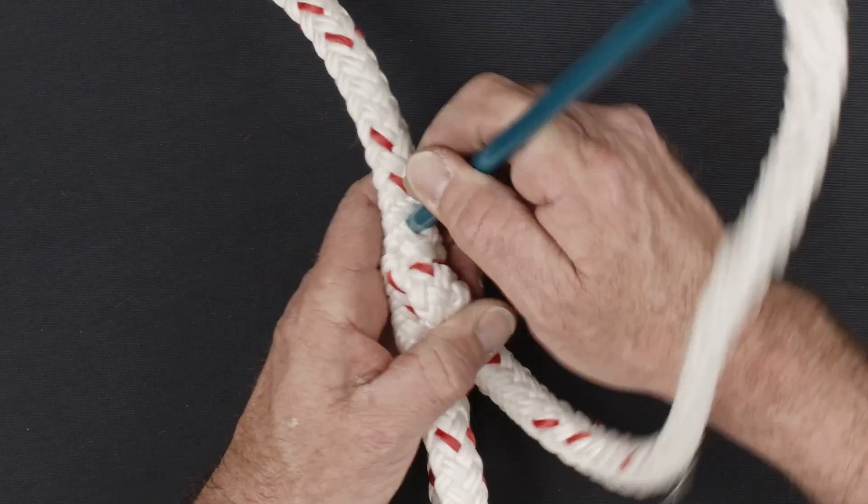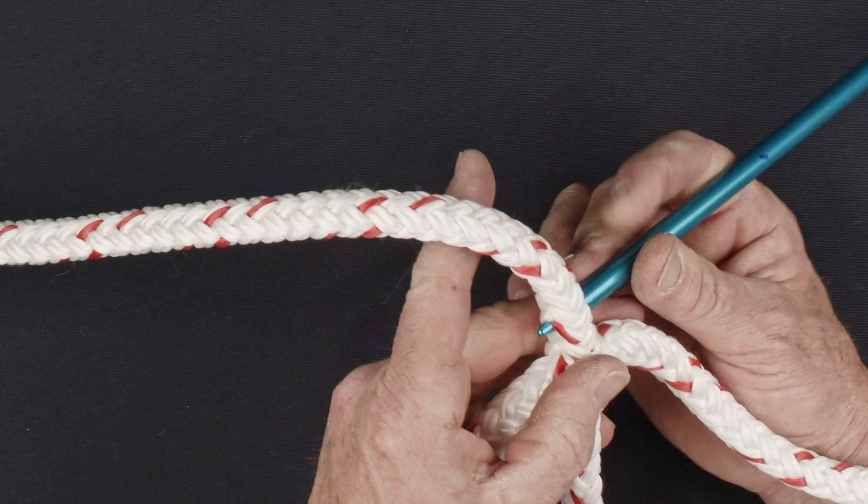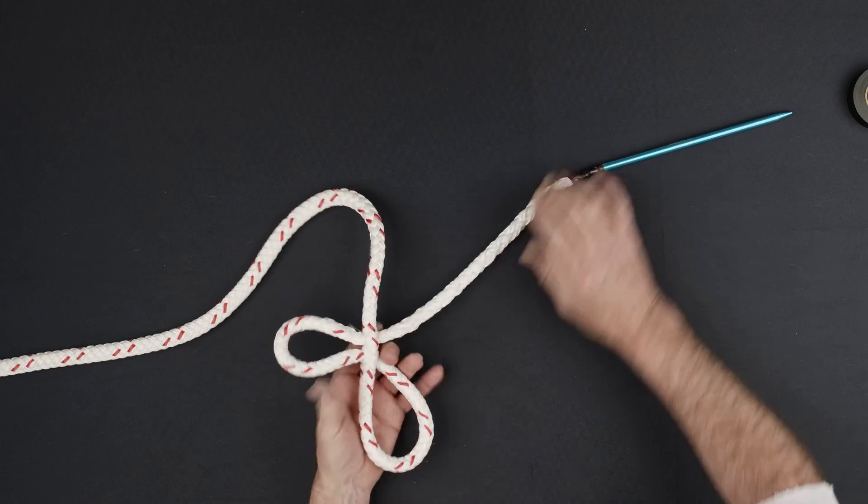Form your first brummel by passing the fid back through the center of the rope two sets of strands up from the location it had previously exited.